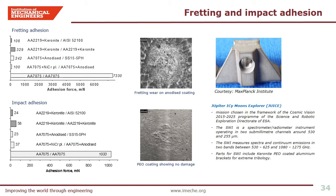Let us look at the fretting and impact wear behaviour of various coatings. While high adhesion between coating and substrate is always required, adhesion between two surfaces in contact is often undesirable — thus, lower adhesion values in the bar plots indicate better combinations. Aluminium-to-aluminium adhesion is extremely high during fretting and impact tests, whereas with appropriate coating systems, adhesion values during both fretting and impact tests are considerably lower. PEO coated aluminum substrate against widely used steel counterpart shows considerable performance enhancement with low adhesion values during both fretting and impact loading. Surface SEM images show considerable coating damage to the anodised layer during fretting tests, whereas the PEO coating sustained no damage except for material transfer from the steel counterpart. This coating has now been approved by the Max Planck Institute and has been used on the JUICE mission.